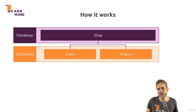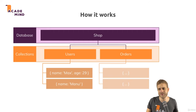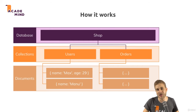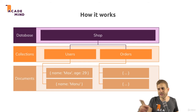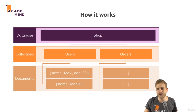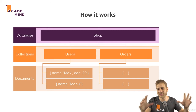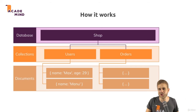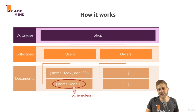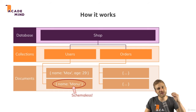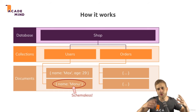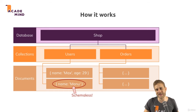Inside a collection, you have so-called documents. These documents, if you have a JavaScript background, might look familiar — they look like JavaScript objects. This is basically how you store data in MongoDB: you use this document format, this object format, as you know it from JavaScript. And you might notice that inside a collection, you are schema-less — this second document does not look like the first one; the age is missing.